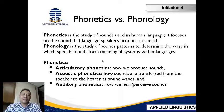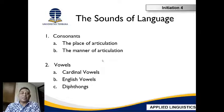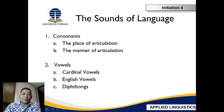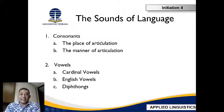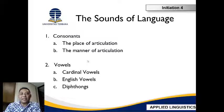The next one is about types or categorizations of the sounds in language. We know what's called consonants and vowels. Consonants are divided into place of articulation and manner of articulation. While vowels consist of cardinal vowels, English vowels, and diphthongs.